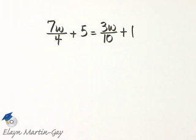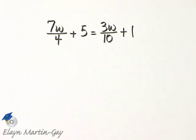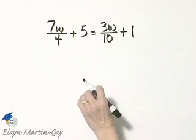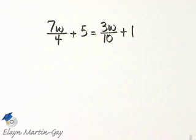So I'm going to multiply the left side of this equation by 20 and the right side of this equation by 20. But by the distributive property, that means we multiply every single term in the equation by 20.